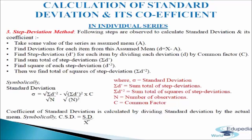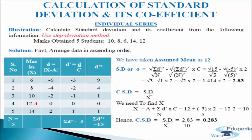The coefficient of standard deviation is calculated by dividing the standard deviation by the actual mean. Symbolically, CSD = SD / mean. Now we will understand the step deviation method with the help of the following illustration.